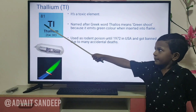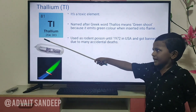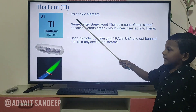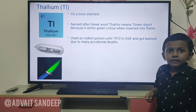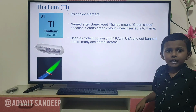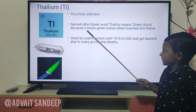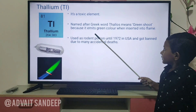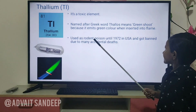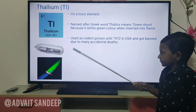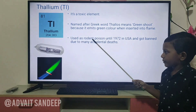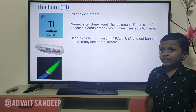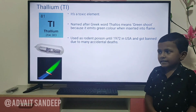Thallium — its atomic number is 81 and the atomic mass is 204.383. It is a toxic element. It is named after the Greek word 'Thallos', which means green shoot, because it emits a green color when inserted into a flame. It was used as a poison until 1972 in the USA and got banned due to many accidental deaths.